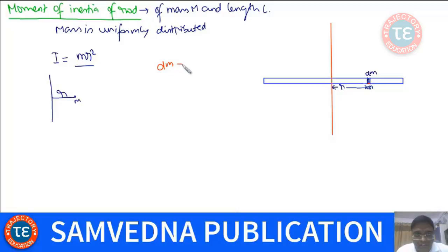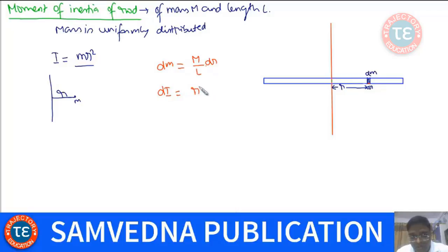We have an element of the rod of length dR lying at a distance R. The mass of this element is (M/L)·dR — that is mass per unit length times dR. We can consider this element as a point mass. Then the moment of inertia of this dm would be R²·dm — that is the moment of inertia of this element.